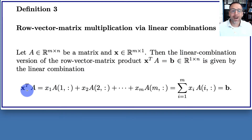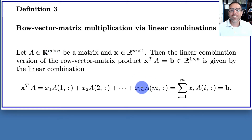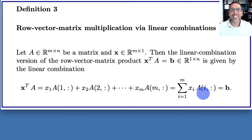The linear combination is given by x^T times A equals the first entry of x multiplied by the first row of A, plus the second entry of x multiplied by the second row of A, all the way to x_m times the m-th row of A. Using summation notation: x^T * A = sum from i=1 to m of x_i times the i-th row, where index i indicates we're going over rows.